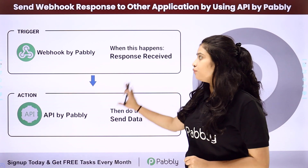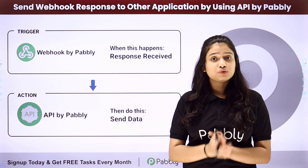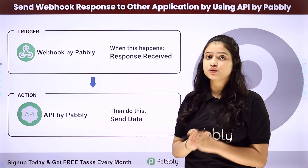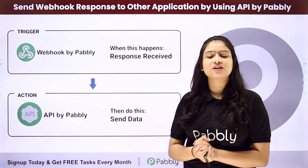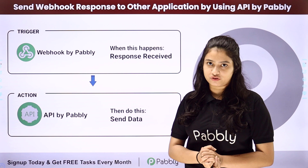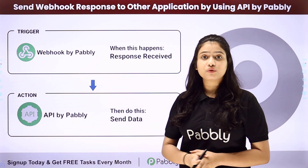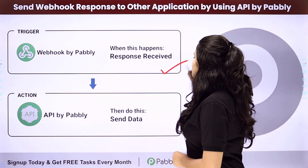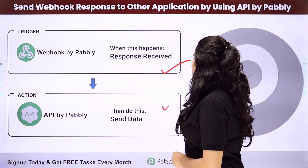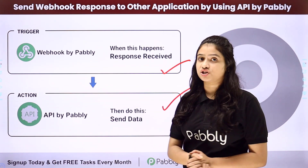For that we will have to integrate both of them, and to do the same we are going to use Pabbly Connect, which is an amazing automation and integration software. We have Webhook by Pabbly in our trigger and API by Pabbly in our action.